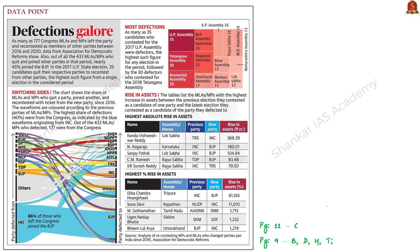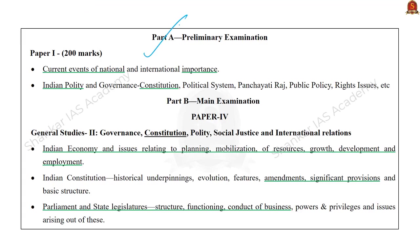The next discussion is based on a data point representing defections by MLAs and MPs in recent times. We will discuss defection, the anti-defection law, resulting disqualifications, and relevant data from the data point.